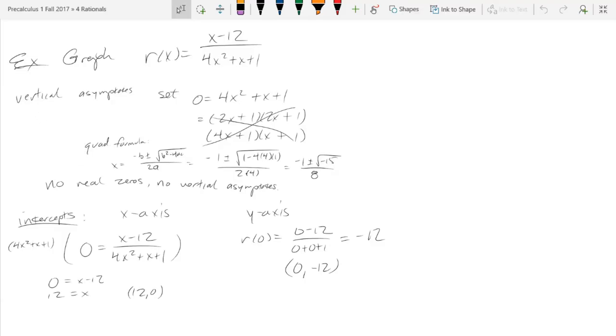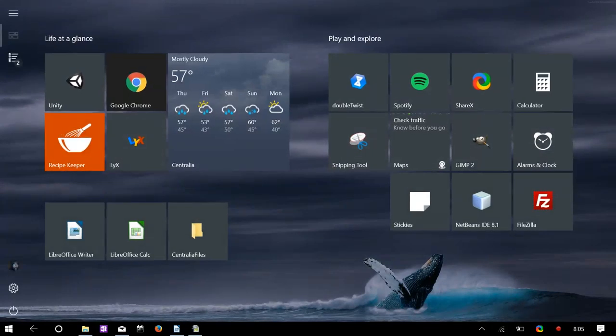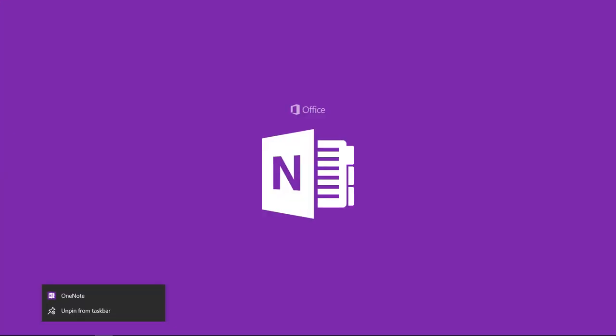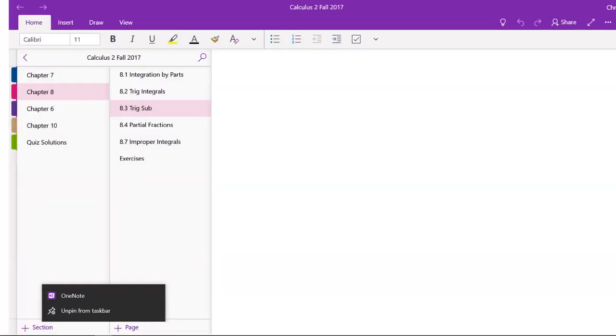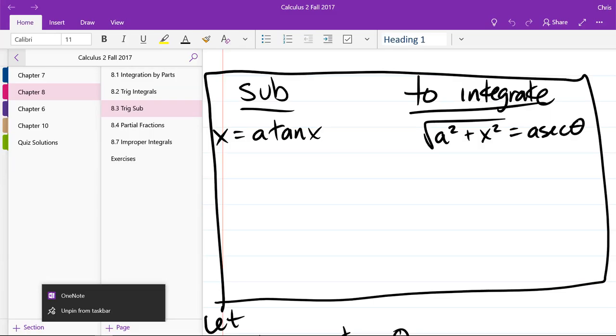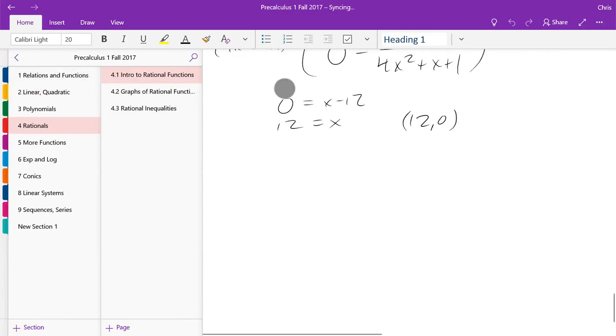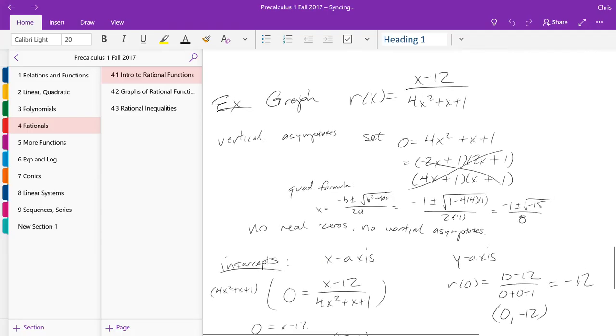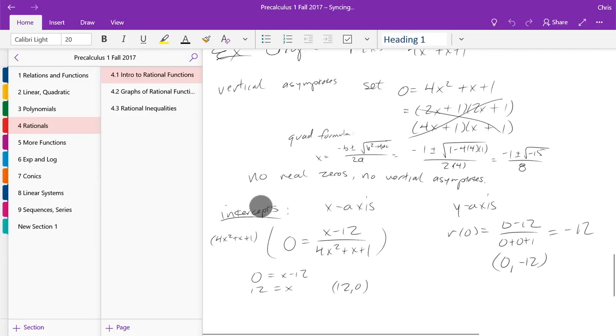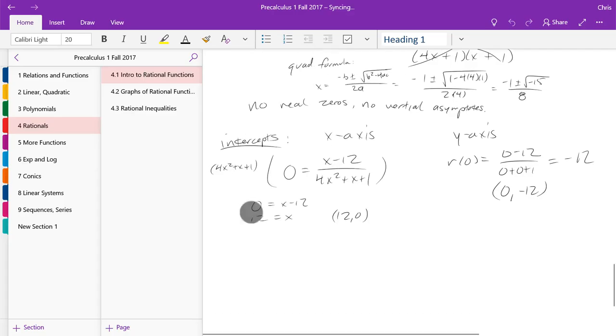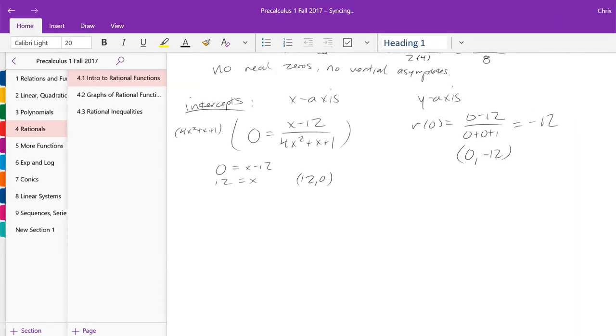So we got our intercepts. We have asymptotes. I don't think we counted crossing and bouncing yet. So there are no vertical asymptotes. Alright. How about end behavior? Let's go and look at that.